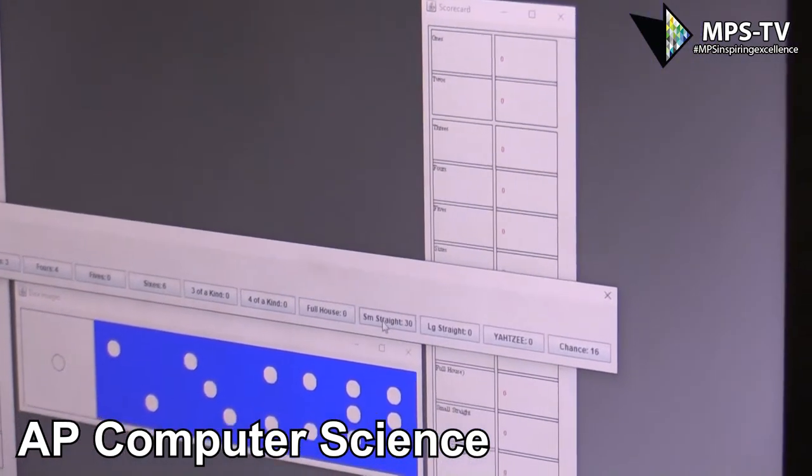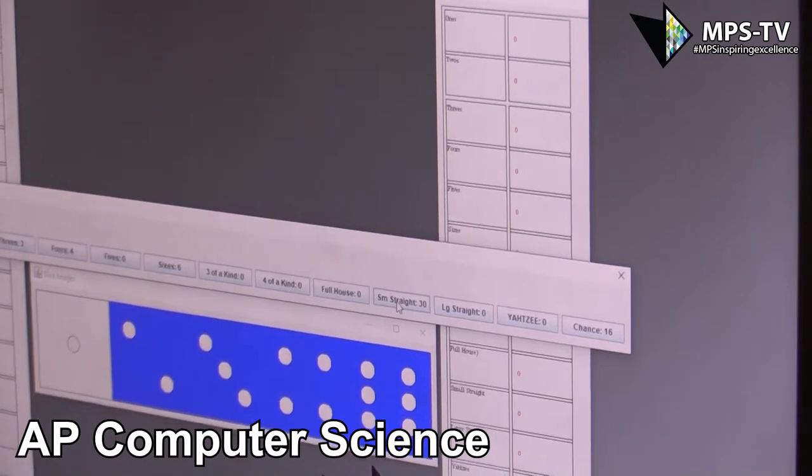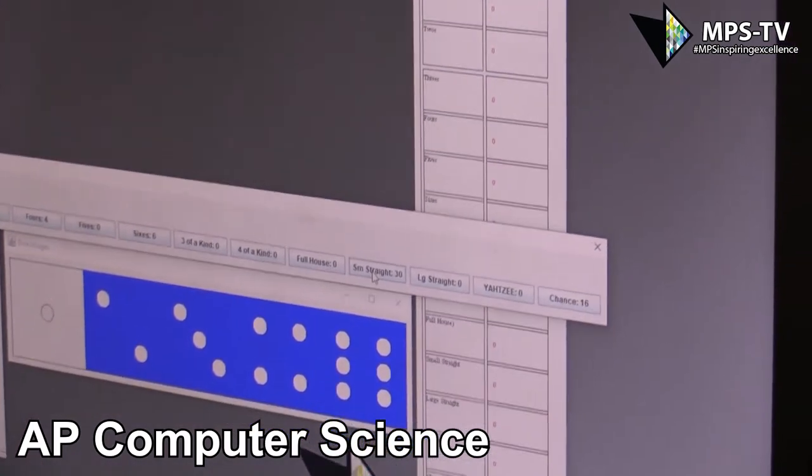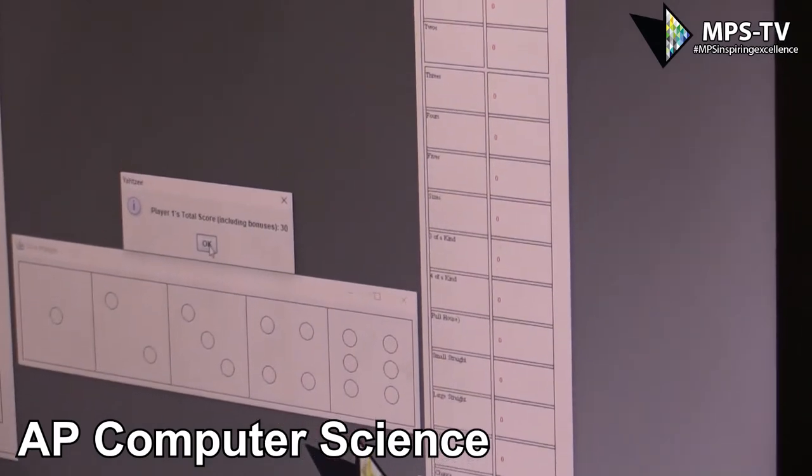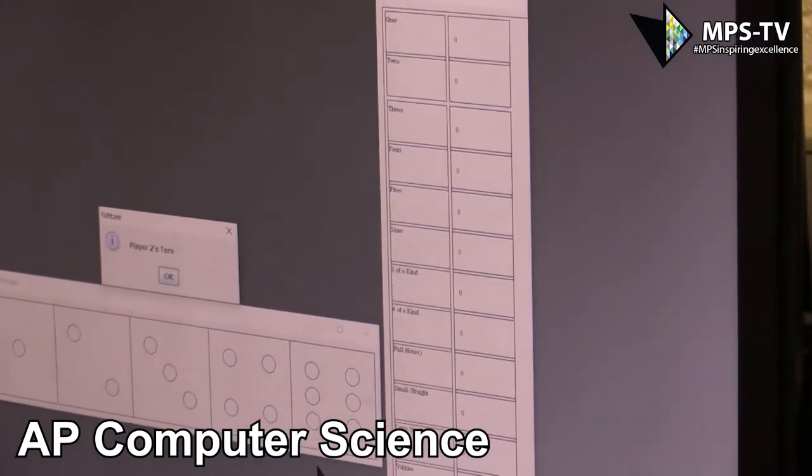And then it gives you an array of scores that you can choose from, and based on some of the code that we wrote it shows you the possible scores that you have, so obviously I'll pick a small straight for that one. And then it inputs it into the score card.